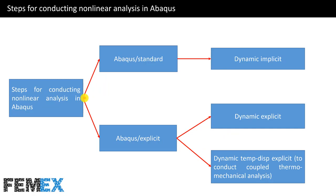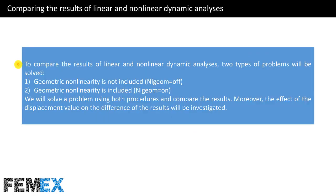For conducting nonlinear analysis in Abaqus, if we want to use the Abaqus Standard solver we must select a dynamic implicit step, and if we want to use the Abaqus Explicit solver we can select a dynamic explicit step or dynamic temp-displacement explicit step. The latter must be used to conduct coupled thermomechanical analysis.